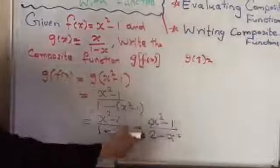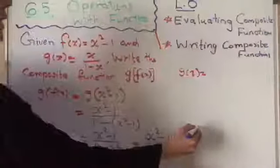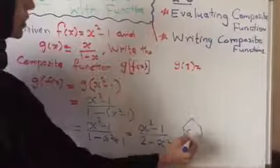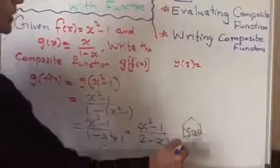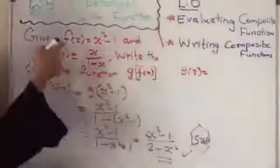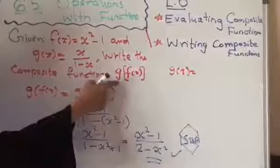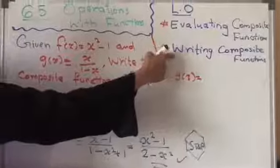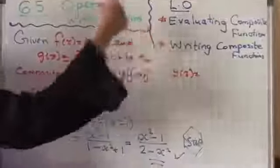And on the top, it remains the same. On the denominator, it is 1 plus 1, which is 2, 2 minus x square. Can I simplify more? No, they all are unlike. So this is your new function, the required new function g of fx. So now we know how to write the composite function. That's it.